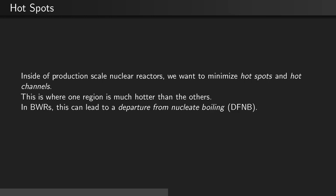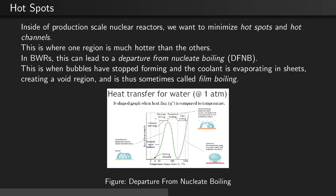In BWRs, this can lead to a departure from nucleate boiling (DFNB). This is when bubbles have stopped forming on the surface of the cladding, and the coolant is instead evaporating in sheets, creating a void region right outside of the cladding. This is thus sometimes called film boiling. The figure here displays the transitions from nucleate boiling to the departure from nucleate boiling.